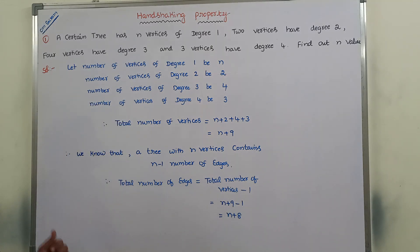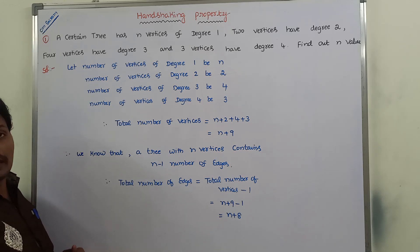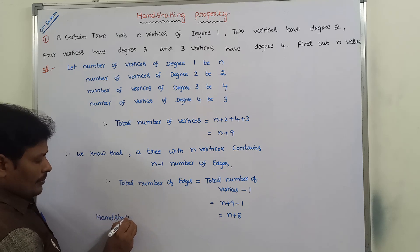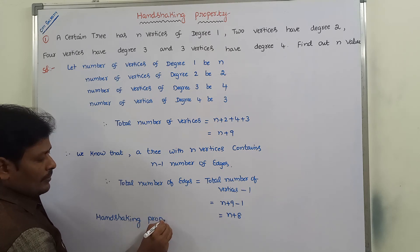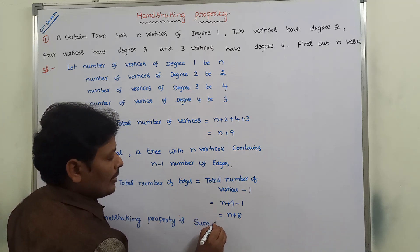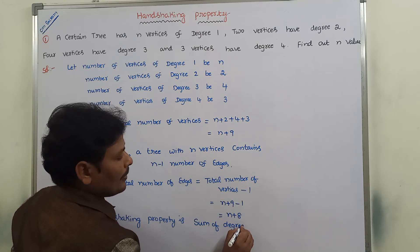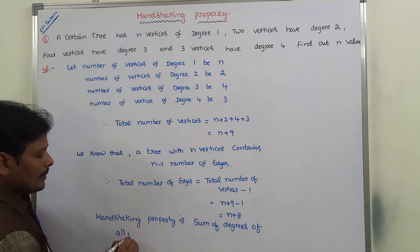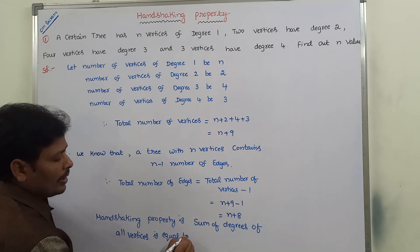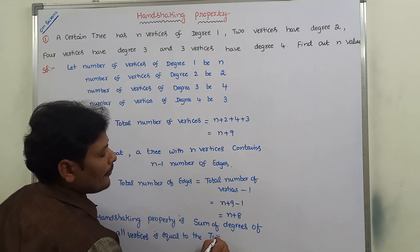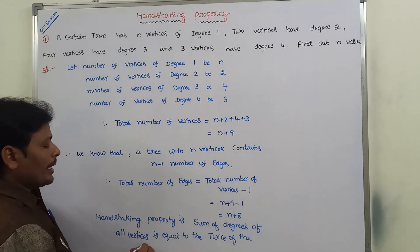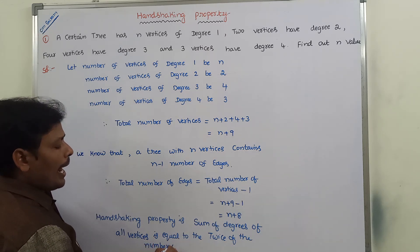We already know the handshaking property. The handshaking property states that the sum of the degrees of all vertices is equal to twice the number of edges.